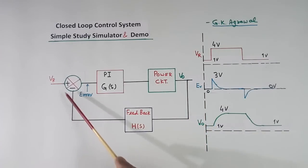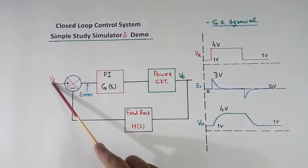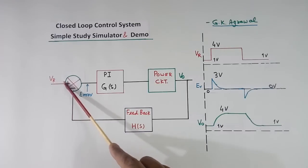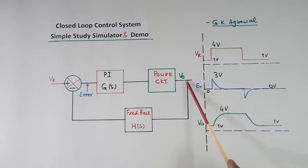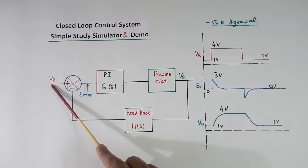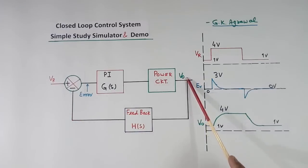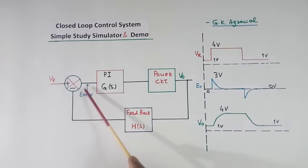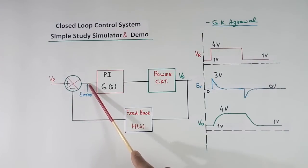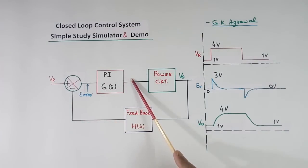Now under steady condition, this and this will be equal — output will be equal to reference. When this and this is equal, error will be zero, so output will not change.